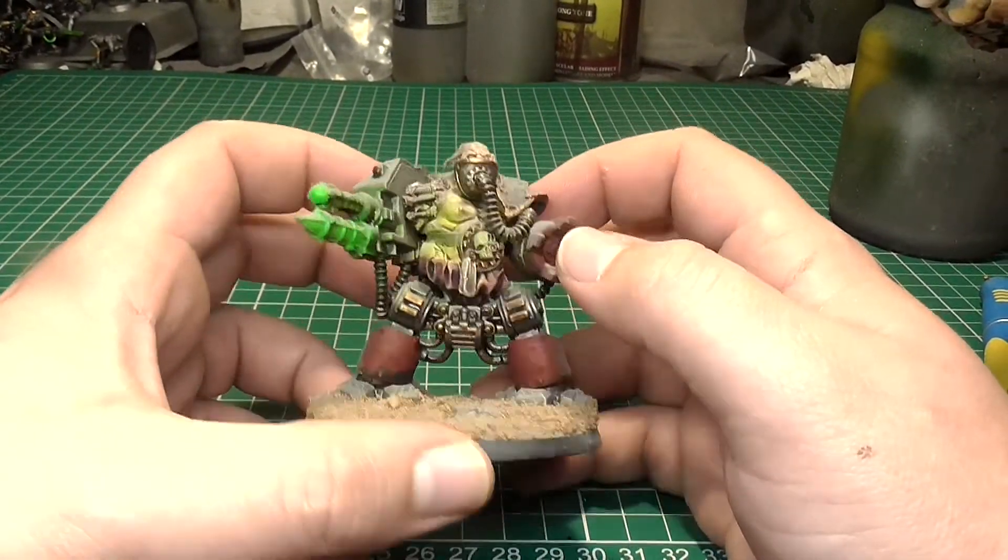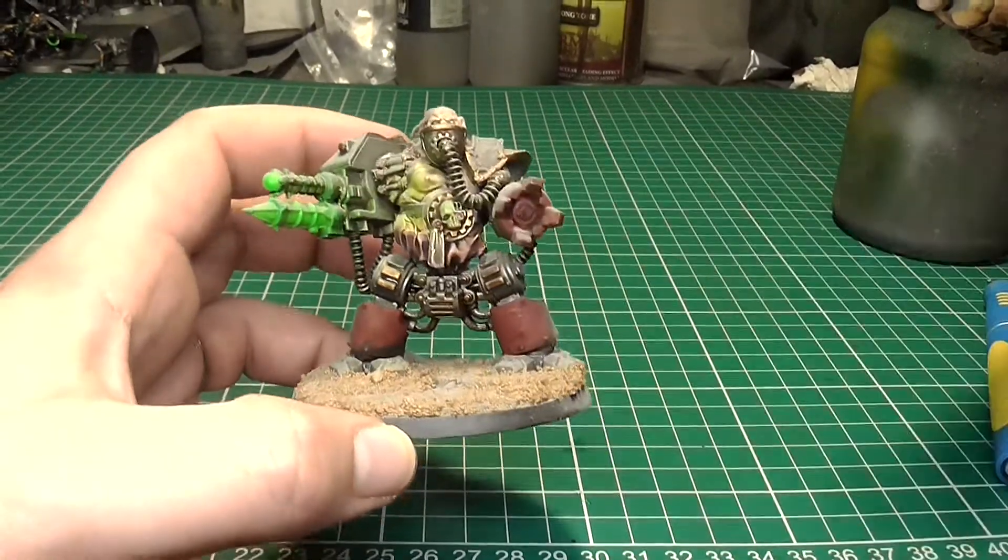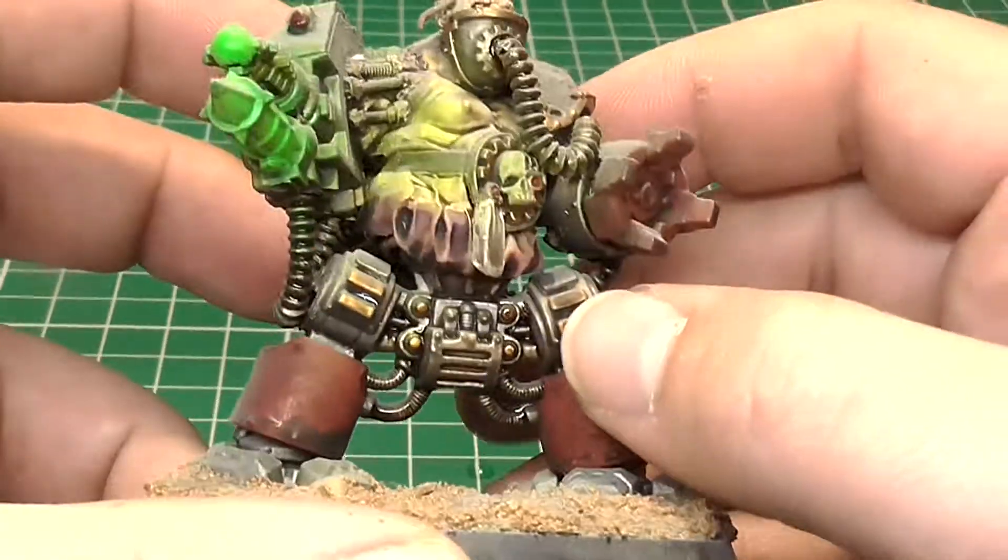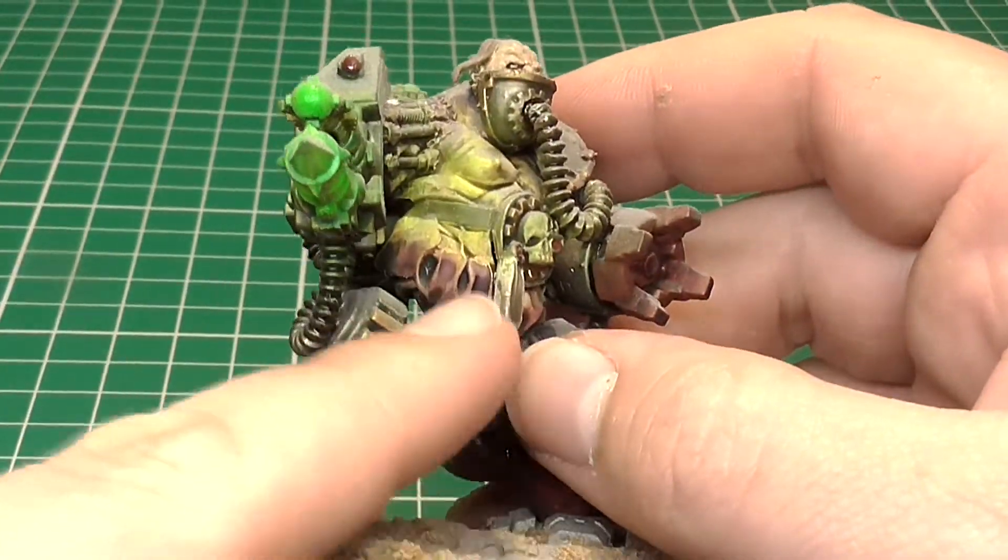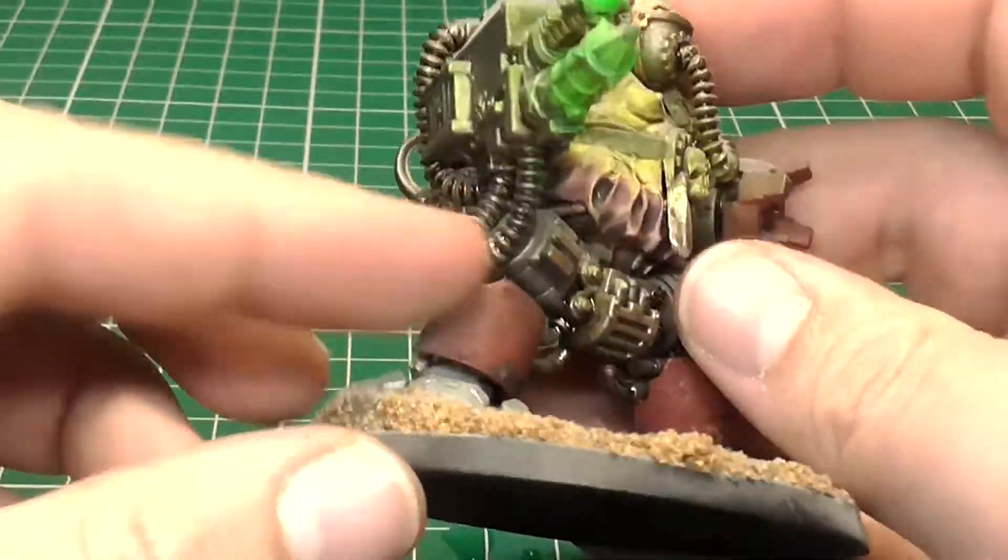you can do crazy cool conversions such as this guy here. This is basically a Dark Mechanicus dreadnought slash Praetorian servitor that I made many years ago. And on here, we have several examples of green stuff sculpting. We've got the areas down here where it's merged to the machine. And we've also got these really cool green stuff cables.